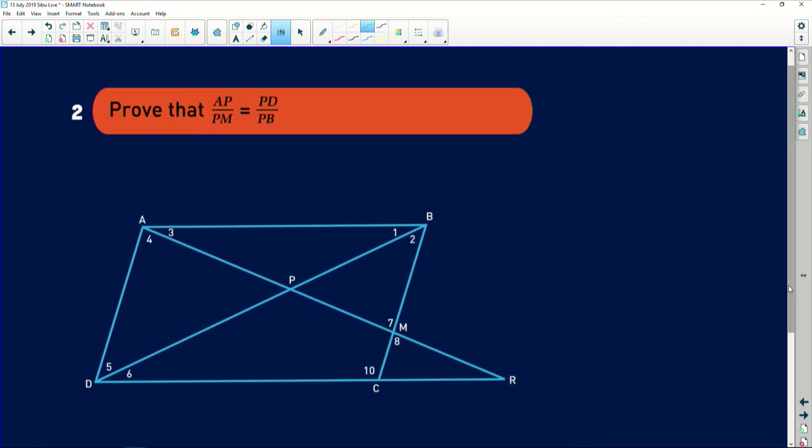Now, this is one of my favorite questions, where they're asking you to prove that the ratio of AP to PM is the same as the ratio of PD to the line PB. So yours is just to identify where is this line AP and this line PM. The line AP and the line PM, the line PB as well.